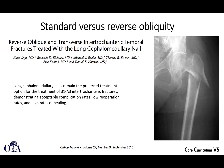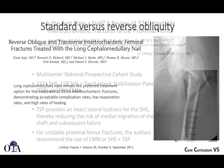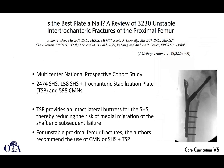The same phenomenon applies to reverse obliquity fractures. A sliding hip screw with a side plate allows uncontrolled sliding in that direction, just like the lateral wall incompetence scenario. These fractures are therefore often treated with intramedullary nails, and the question of long versus short nail will be discussed shortly.